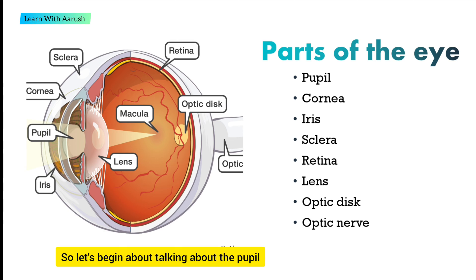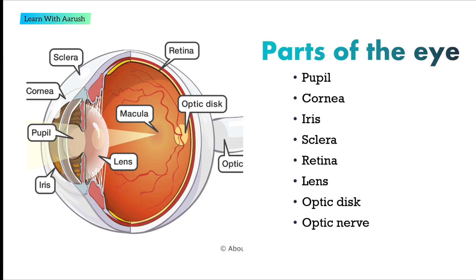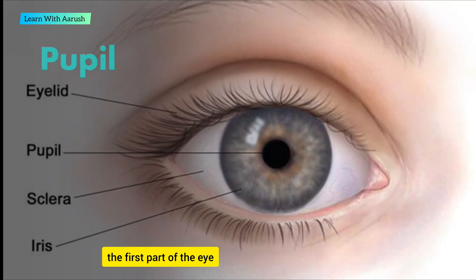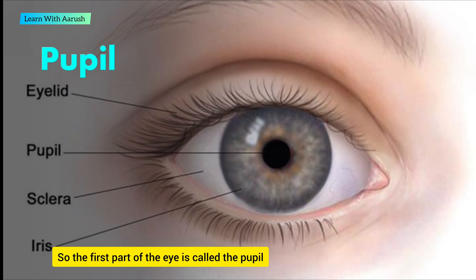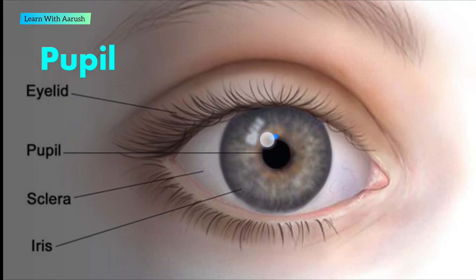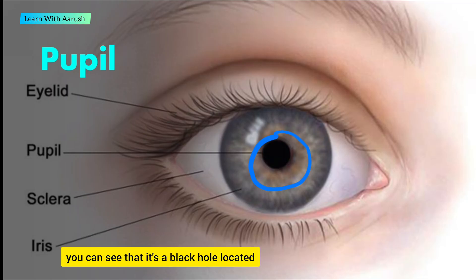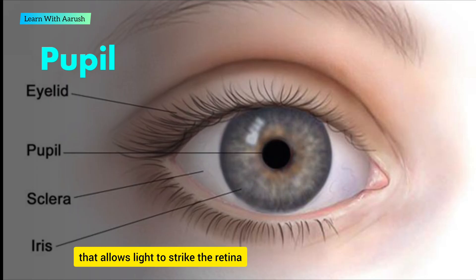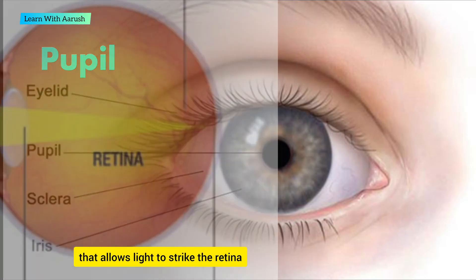So let's begin talking about the pupil, the first part of the eye. This is the pupil — you can see that it's a black hole located in the center of the iris of the eye that allows light to strike the retina.